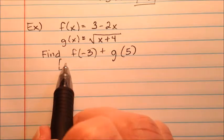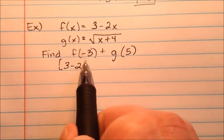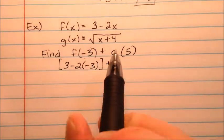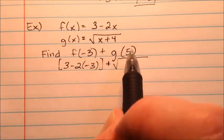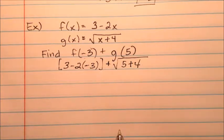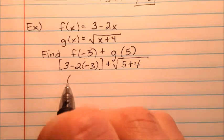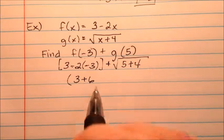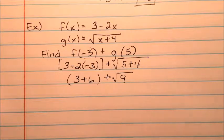So our f function is 3 minus 2x, but then negative 3 is my value there. I'm going to add to that my g function, so the square root of x plus 4, and 5 is going to go in for my x, so 5 plus 4. So when I reduce this one, this will be a 3, and then negative 2 times negative 3 will be a positive 6.